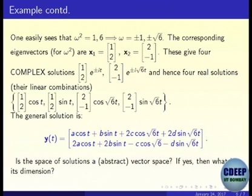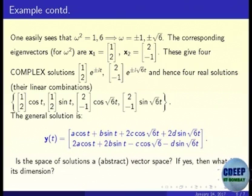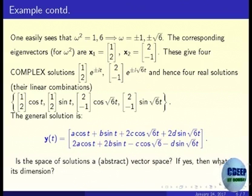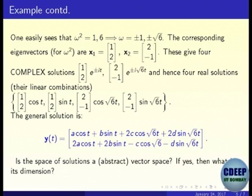These give our 4 complex solutions because omega takes values ±1 and ±√6. For eigenvector (1, 2), the eigenvalue is 1, so omega is ±1 and the solutions are e^(±it). For eigenvector (2, -1), the solutions are e^(±i√6 t). So we have solved for the eigenvectors — the null space approach gives (1, 2) and (2, -1) respectively.